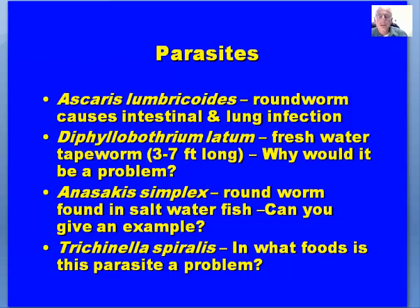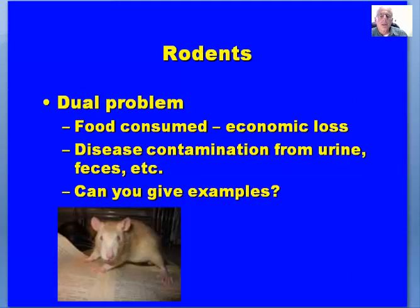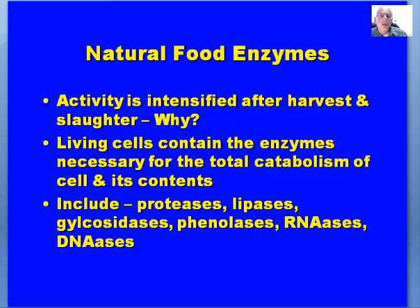Trichinella spiralis — what food is this parasite a problem in? It's not really a problem today in products processed in slaughterhouses in the US. However, there is a wild species of animal where Trichinella spiralis can be an issue and one would need to be very careful in cooking that particular meat. Rodents are a dual problem: they consume food, causing economic loss, and they contaminate food. They can be a source of diseases either from urine or feces.